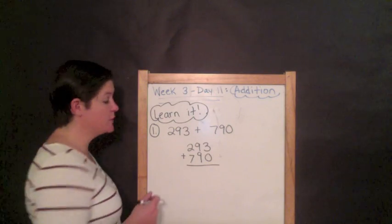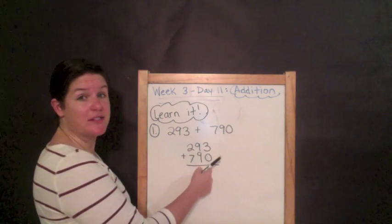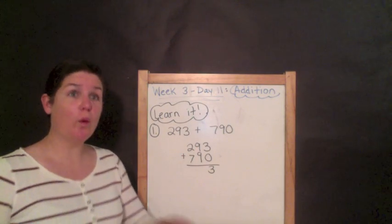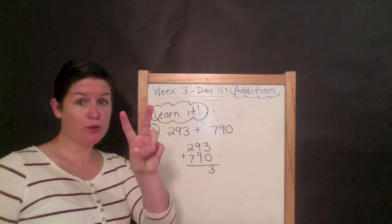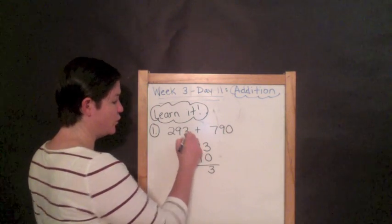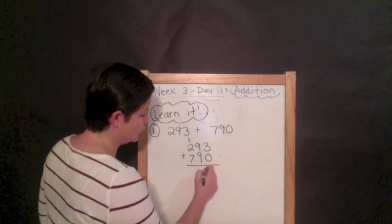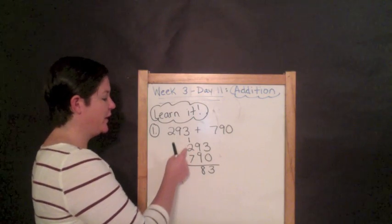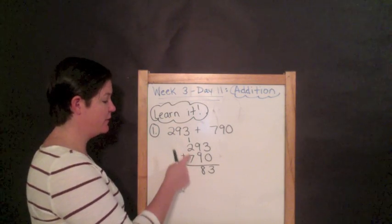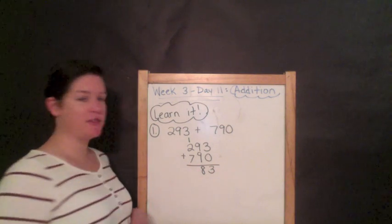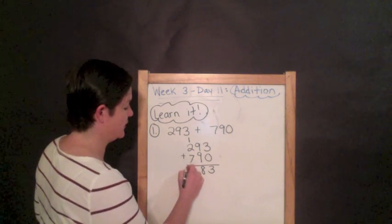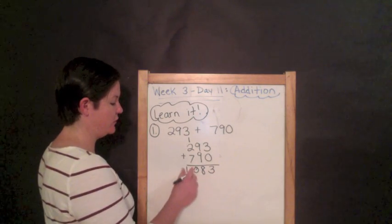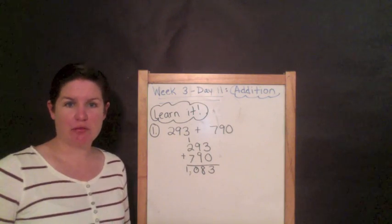And we're going to add those up. Now we start in the ones place. Three plus zero is three. Nine plus nine is eighteen. Eighteen is a two-digit number, so eighteen. One plus two is three, and three plus seven is ten, which is also a two-digit number, but there's nothing else to add, so we're just going to bring down our ten. And then ones, tens, hundreds, comma, one thousand eighty-three is your answer.